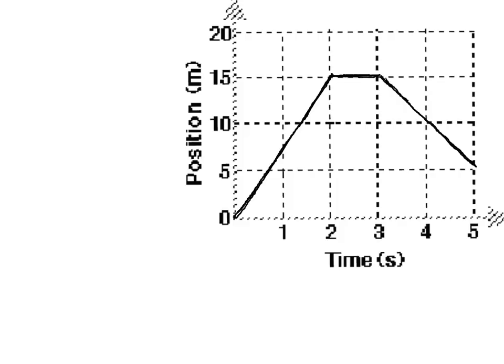Here we have a position-time graph with three different types of motion represented. If you were asked to describe the motion in words, some things you need to look for are what kind of slopes we see in the three different sections. The first section is clearly a positive slope, the center section is clearly a zero slope, and the last section is clearly a negative slope. Another thing is the starting position — where the object is at time zero, which is at zero position at time zero seconds.